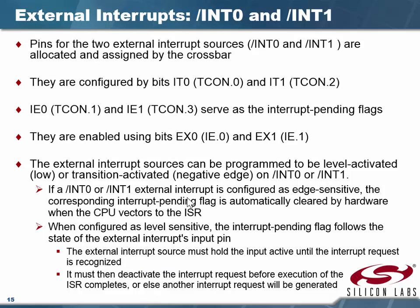Pins for external interrupts are allocated and assigned by the crossbar. The crossbar assigns I/O pins according to which ones you need for your particular application. We've got around 22 pins on this processor, and since we can connect many things to it, we have to assign pins accordingly. So we have to tell the crossbar we want to use interrupt zero — note that it has a NOT in front of it, so it's active low.